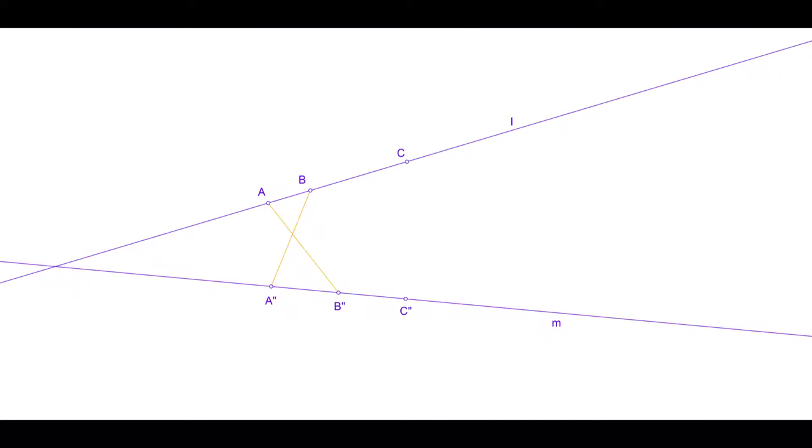These are known as crosslines. Now do the same for A and C. Call the line connecting the two intersections of the crosslines P.